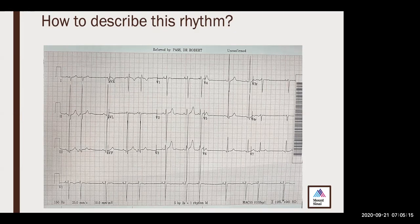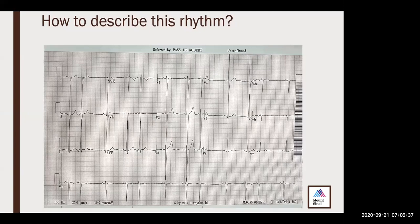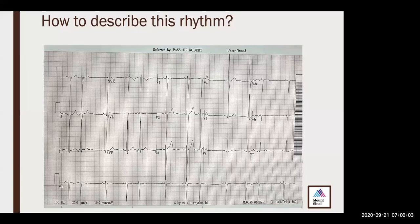Irregular rhythm, narrow complex. I am checking whether there are P waves before the QRS complexes. I see some P waves, but they are not the same. I believe there is some atrial ectopy. I see a P wave and a QRS, then a different kind of P wave and a QRS, then a pause — a premature atrial contraction that was conducted, and then a regular P wave. So I would call it atrial trigeminy.